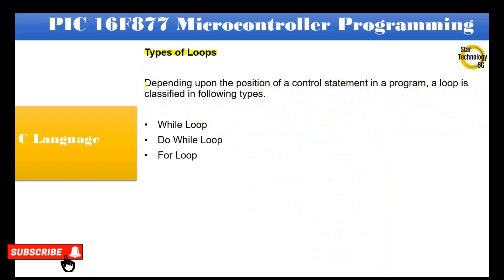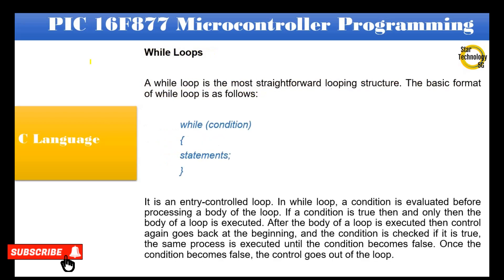Depending upon the position of a control statement in a program, a loop is classified into the following types: while loop, do-while loop, and for loop. A while loop is the most straightforward looping structure. The format is: while (condition) { statements }. It is an entry-controlled loop — the condition is evaluated before processing the body of the loop. If the condition is true, the body of the loop is executed. After execution, control goes back to check the condition. Once the condition becomes false, control exits the loop.